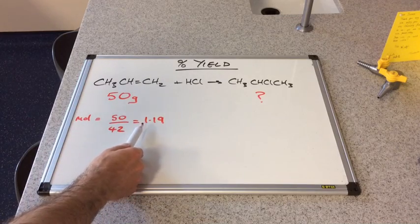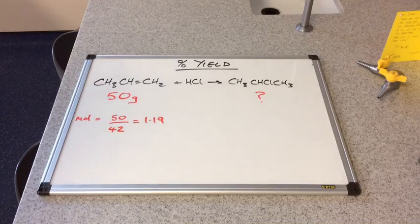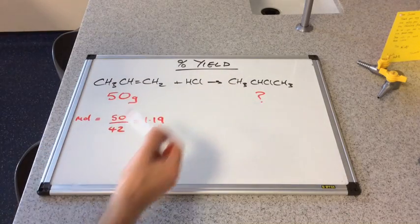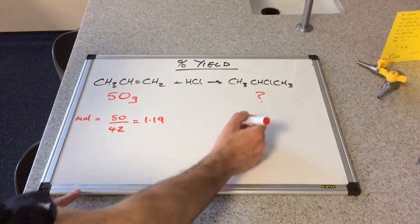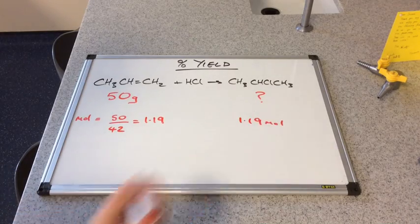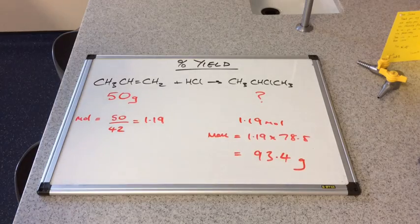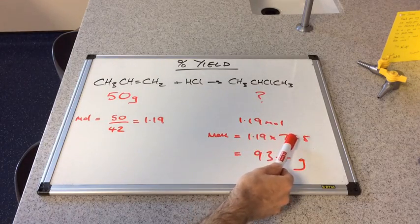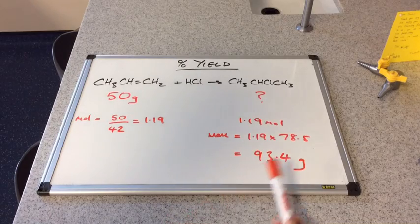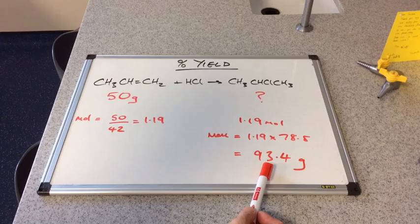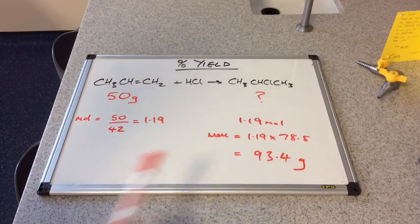So that comes out at 1.19 moles. If you look at the mole ratio in the equation, it's a 1 to 1 ratio. So we should also make 1.19 moles of product. To convert that to grams, we multiply the moles by the MR of 2-chloropropane, which is 78.5 grams per mole, and we get 93.4 grams of product.